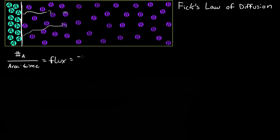And that is equal to J_AZ. So A just represents whatever's crossing it, and the Z actually means going in this direction, in the Z direction, so it's the flux of A in the Z direction.